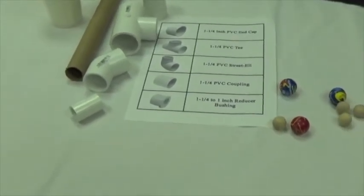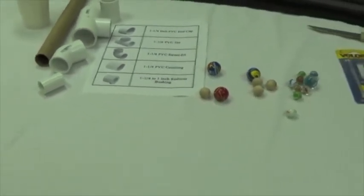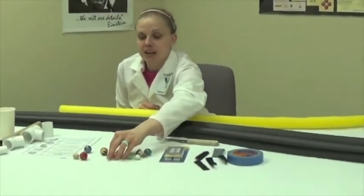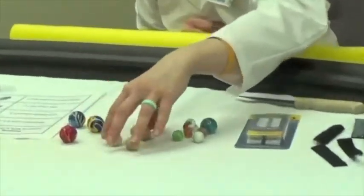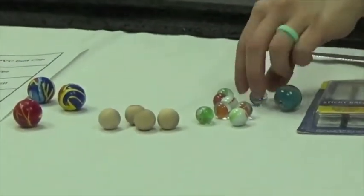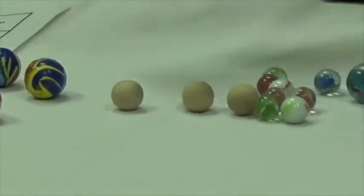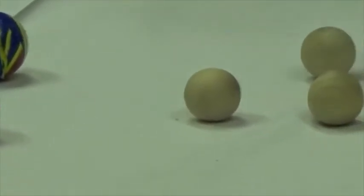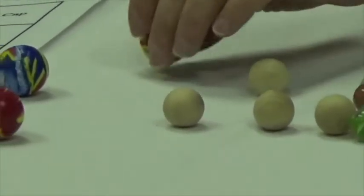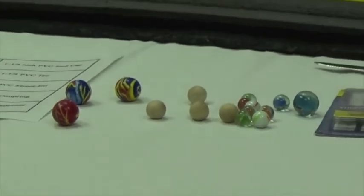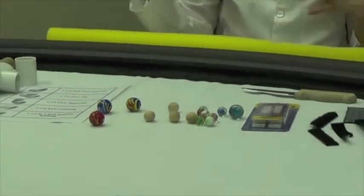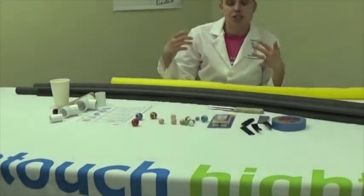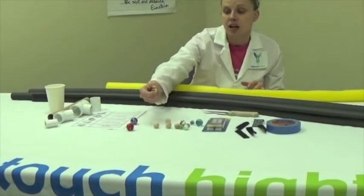Another great part about this program is we're going to be learning about designing and engineering as it has to do with amusement parks. Here I have three different types of marbles. I have the glass marbles, different sizes of glass marbles, wooden marbles, and these are just your rubber bouncy balls. You can get different sizes of those because when the kids are designing their roller coasters, they're going to want to try out different sizes, different shapes of these marbles.